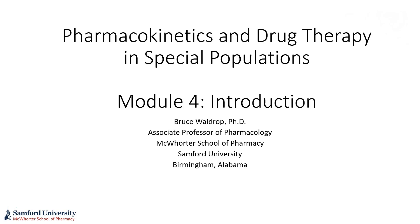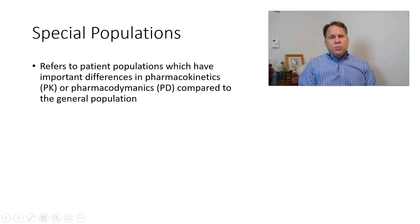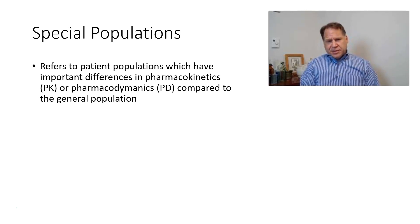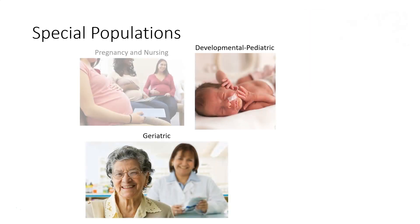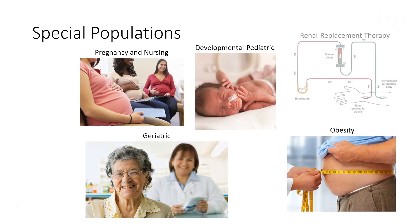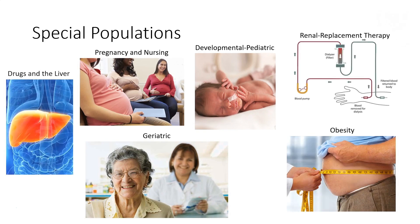Special populations refers to patient populations which have important differences in pharmacokinetics or pharmacodynamic responses compared to the general population. We will be looking at six of those special populations in this module. Over the next few minutes we are just going to hit some major points for each of these six areas so that you are ready and prepared to go into more detail later.